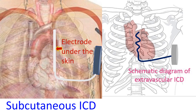These new types of ICDs have been innovated to avoid potential problems with intravascular leads in conventional ICD systems. Intravascular leads can get infected, fractured, or dislodged, and occasionally perforate the cardiac chambers. Leads can also lead to formation of intravascular thrombi and cause thromboembolism or venous obstruction. For these reasons, the lead has been called the Achilles heel of most cardiac implantable electronic devices, which include pacemakers and ICDs.